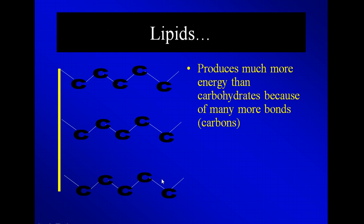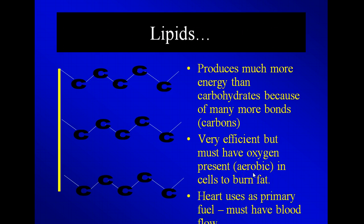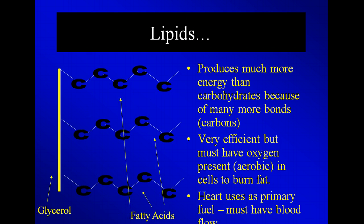One gram of carbohydrates gives you four calories, but one gram of fat gives you nine — meaning fat has a lot more potential energy and can make a lot more ATP. To burn fat, you have to have oxygen present, so you can only burn fat aerobically. Your heart uses fat as a primary fuel because it has so much more potential energy and the heart needs a constant supply of energy to keep beating. But to burn it, the heart also needs a constant oxygen supply, which means a constant blood supply. When you have a heart attack and decrease blood flow, the heart muscle cannot function as it should.